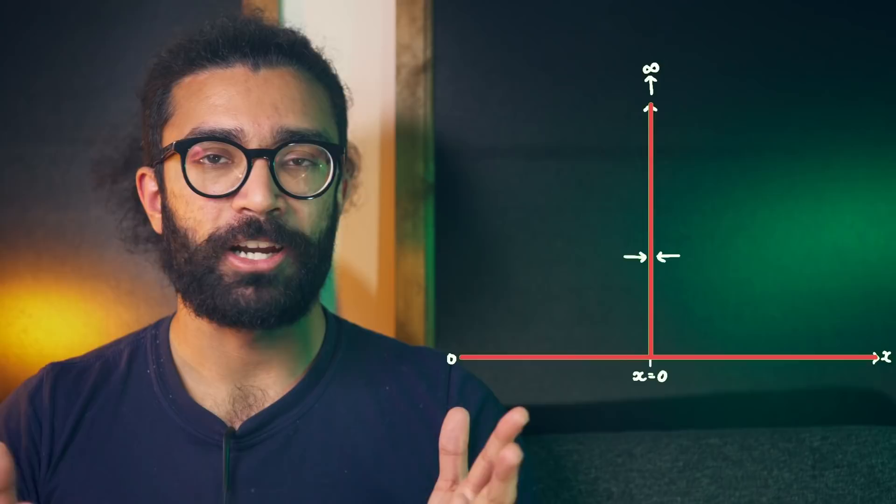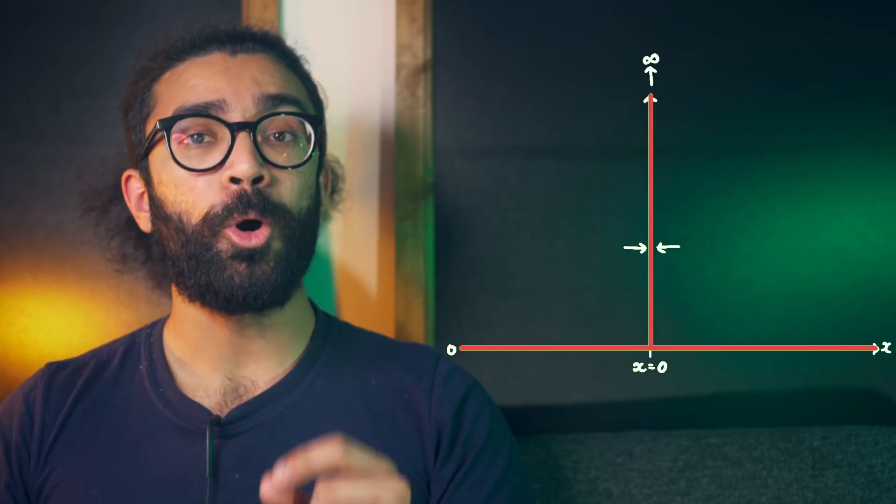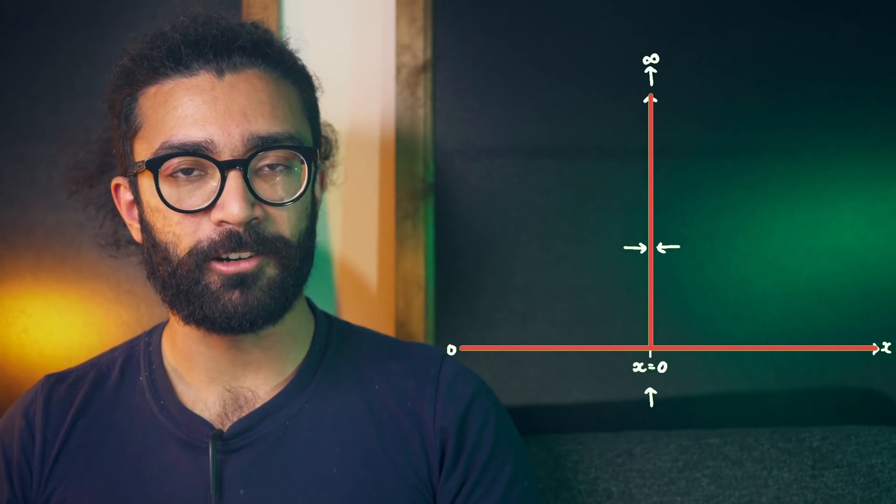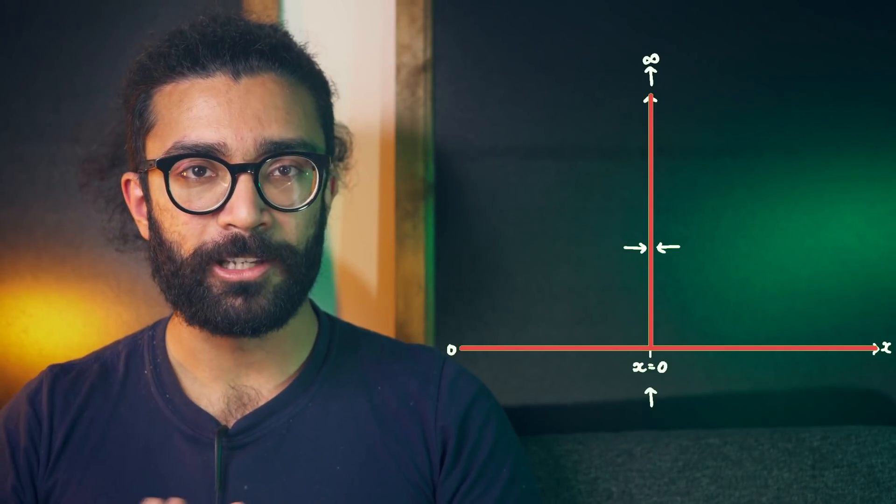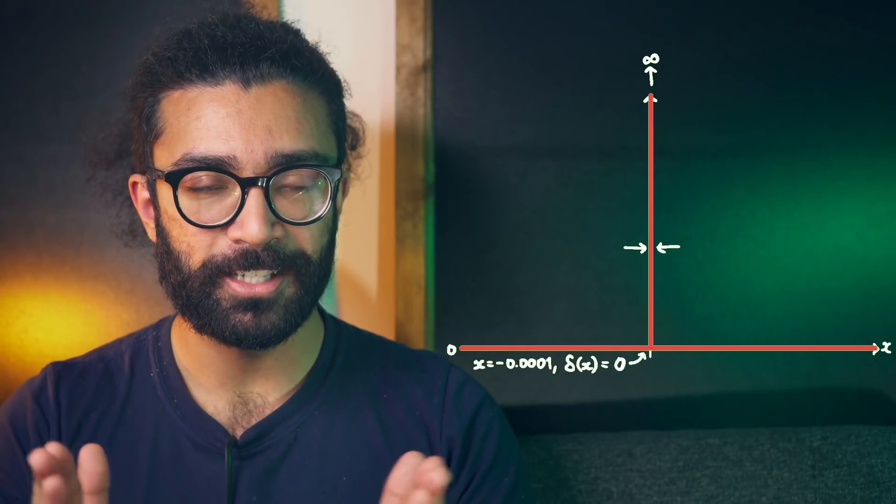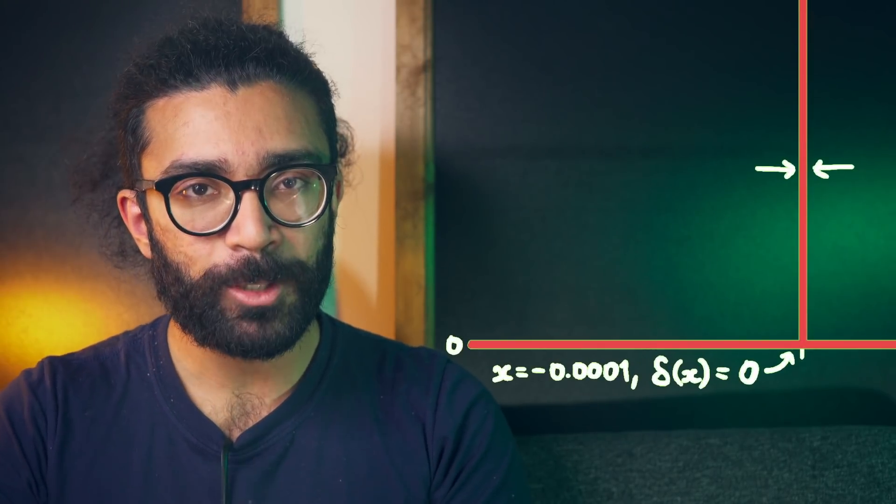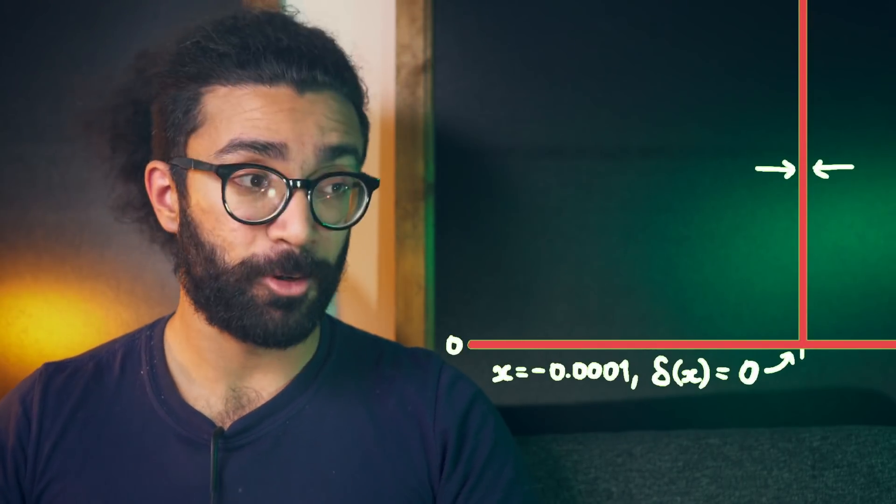Already we can see that there's some strange stuff going on. What do we mean by infinitely thin? Well, all it means is that the function only spikes at this value, x equals zero. For any other x value, no matter how close we get to x equals zero, the value of the function itself is always zero.